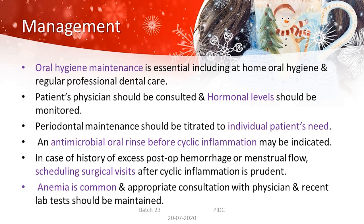For management, oral hygiene maintenance is essential, including home oral hygiene and regular professional dental care. The patient's physician should be consulted and hormonal levels monitored. Periodontal maintenance should be titrated to the individual patient's needs, and antimicrobial oral rinse before cyclic inflammation may be indicated. In cases of history of excess post-operative hemorrhage or menstrual flow, scheduling surgical visits after cyclic inflammation is prudent. Since there is significant blood loss, anemia is common, and appropriate physician consultation with recent lab tests should be maintained.